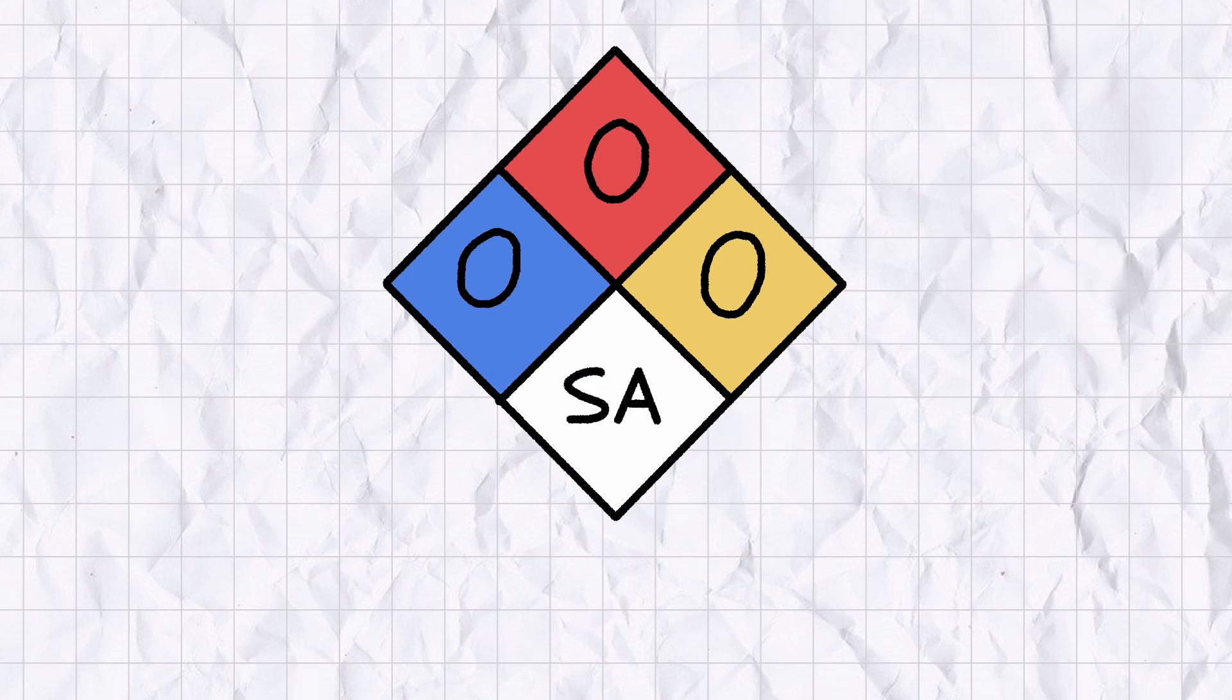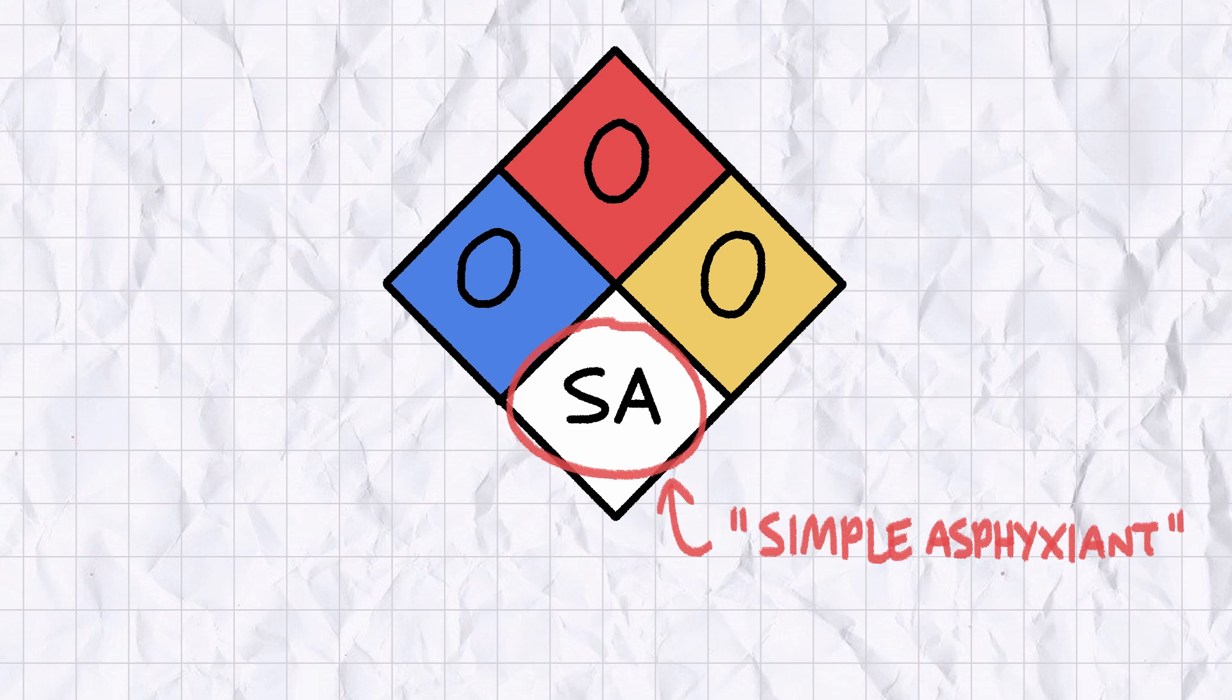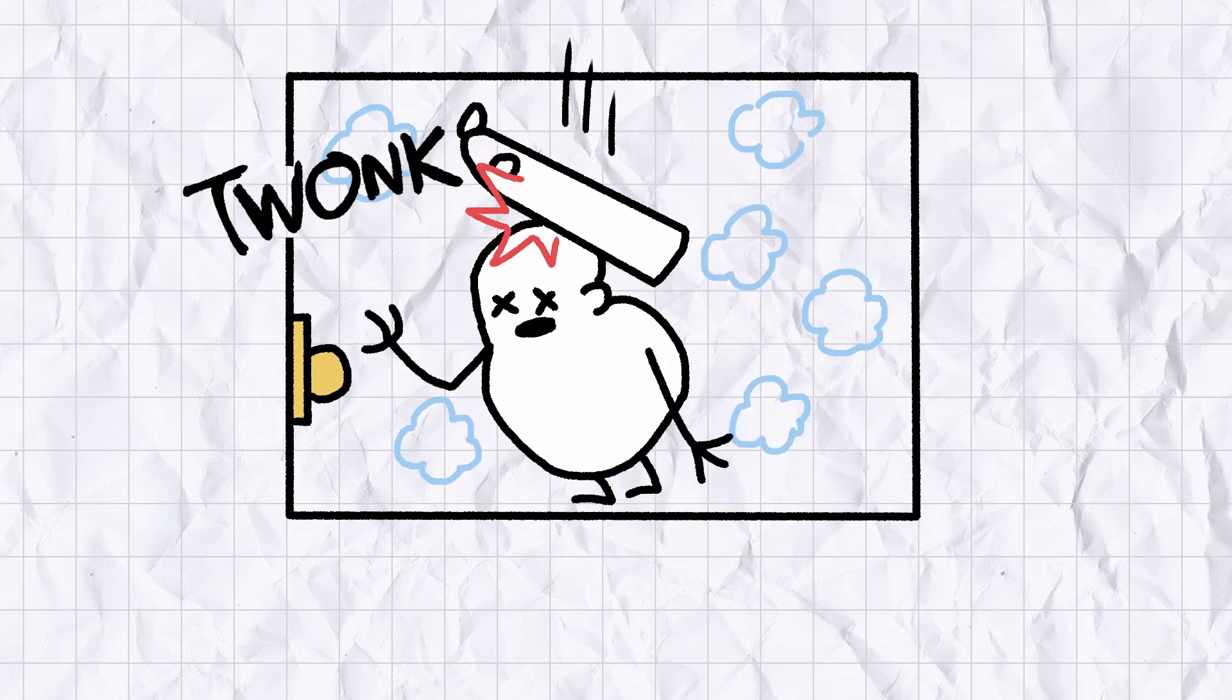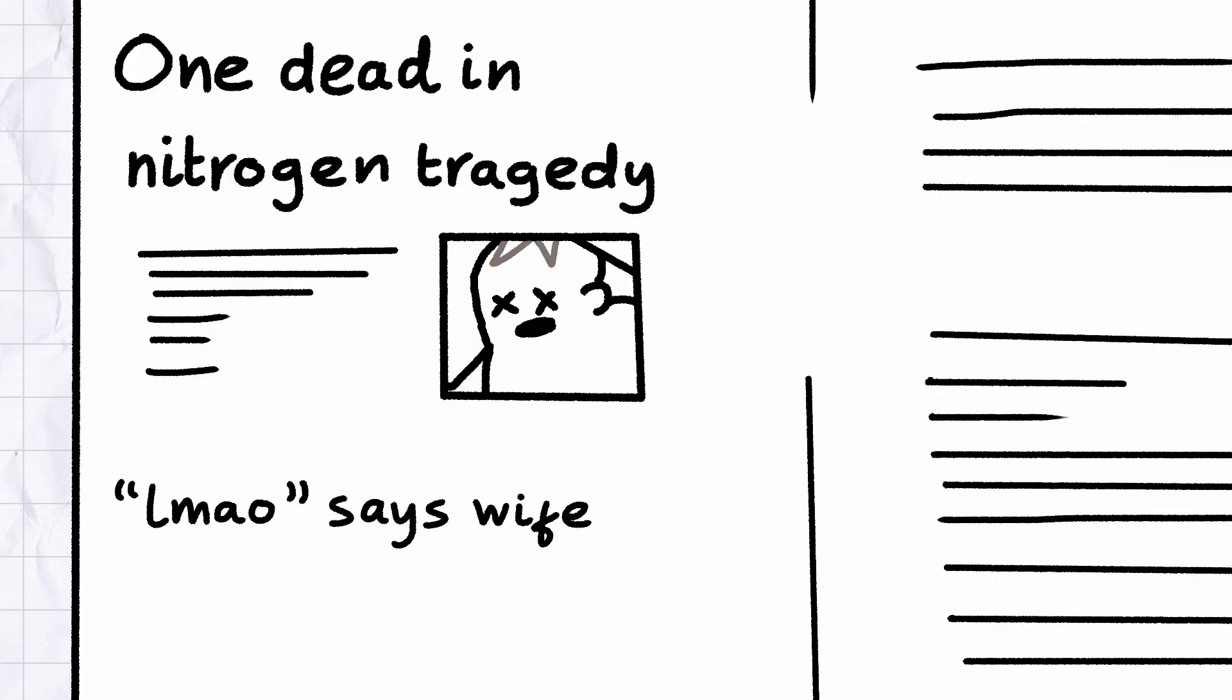In fact, the only real hazard posed by nitrogen gas is the SA in the white square, which stands for Simple Asphyxiant. But unless you literally entomb yourself in a room full of nitrogen gas, or get bonked on the head by a canister of it, it's not particularly likely to feature in the details of your obituary.